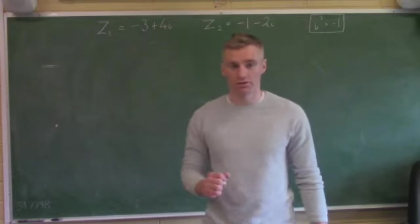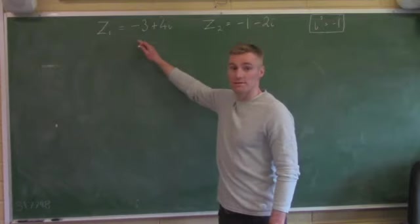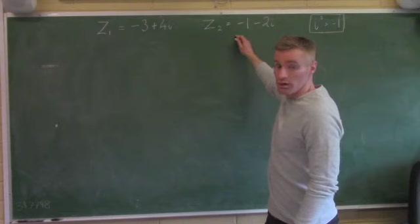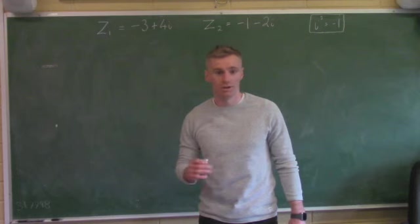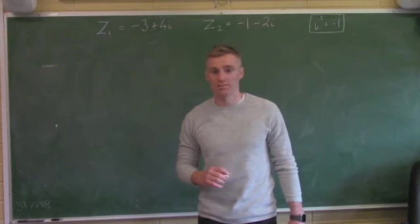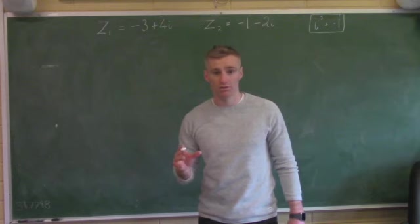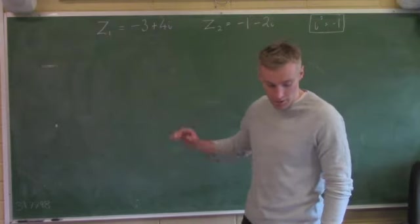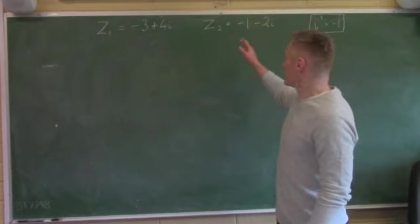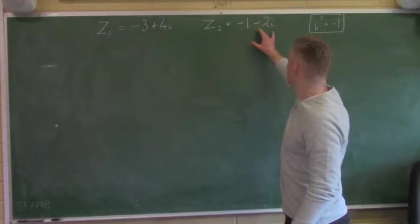Hello everyone, we're just going to go through a question on complex numbers. So what I have on the board is Z1 and Z2. This question is like the 2018 paper 1 question 2 on complex numbers. Z1 equals minus 3 plus 4i, Z2 equals minus 1 minus 2i.